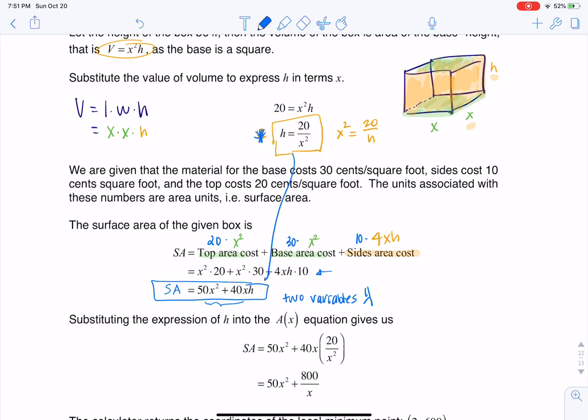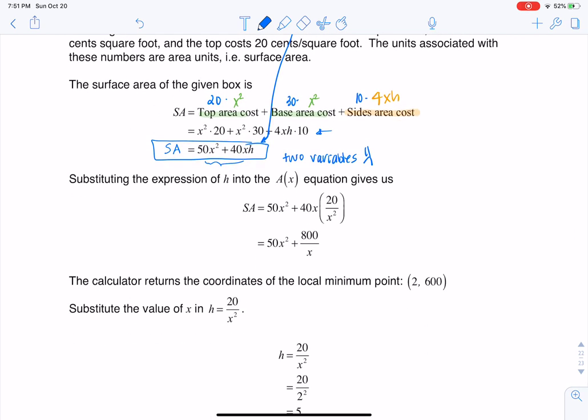So I'm going to take that H, or that formula for H being 20 over X squared, and I'm going to sub it in. And that's where you see me saying right here that instead of 50X squared plus 40XH, I've made the substitution of 20 over X squared. So now I have this substitution. Substitute for H.